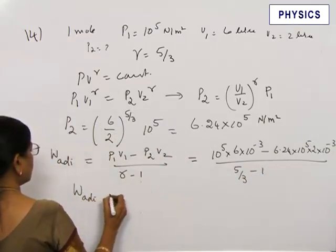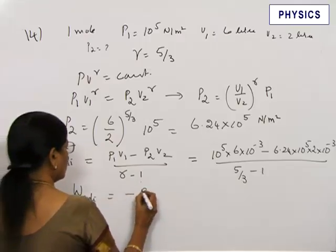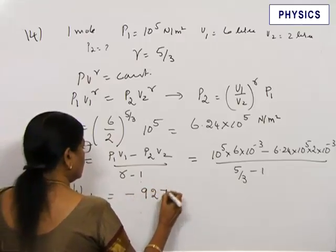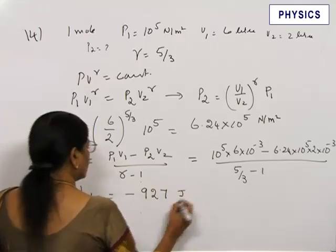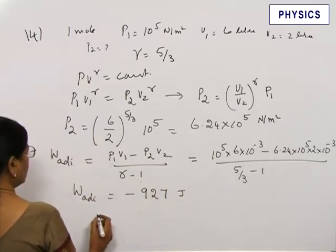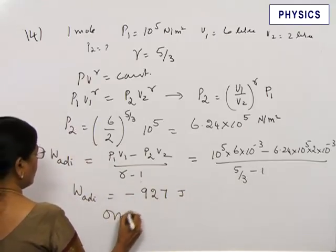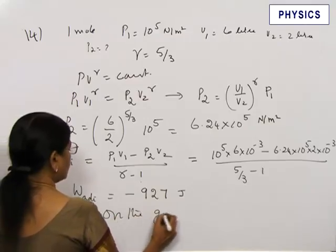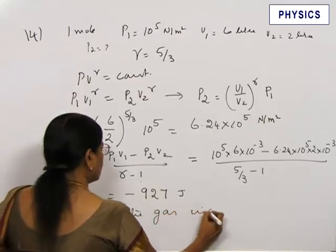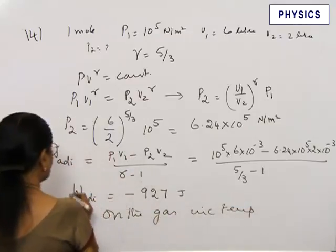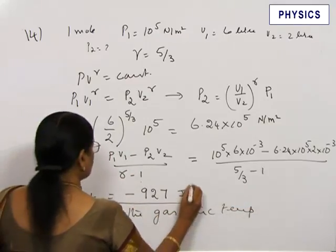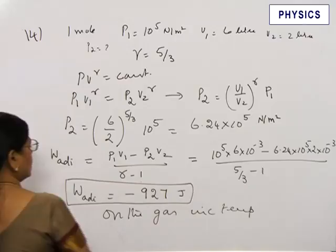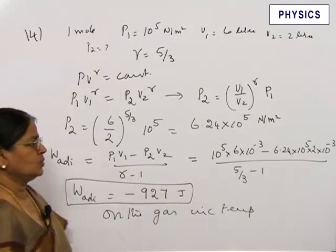W adiabatic equals minus 927 joules. The negative sign indicates work is done on the gas and this will increase the temperature. So the answer is minus 927 joules.